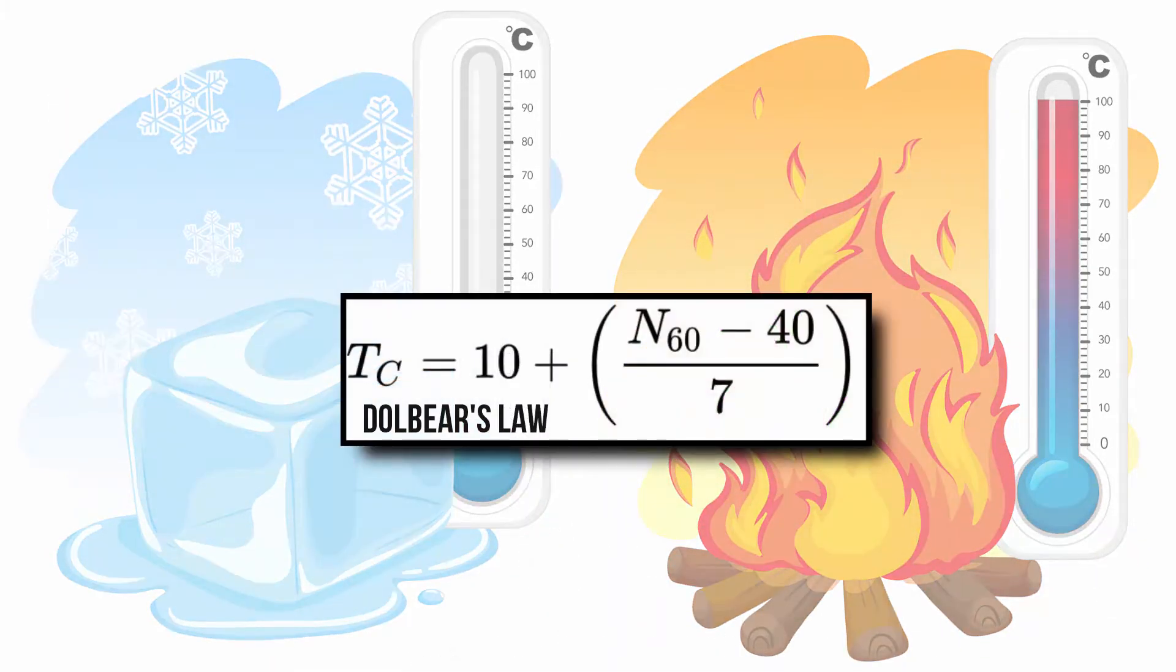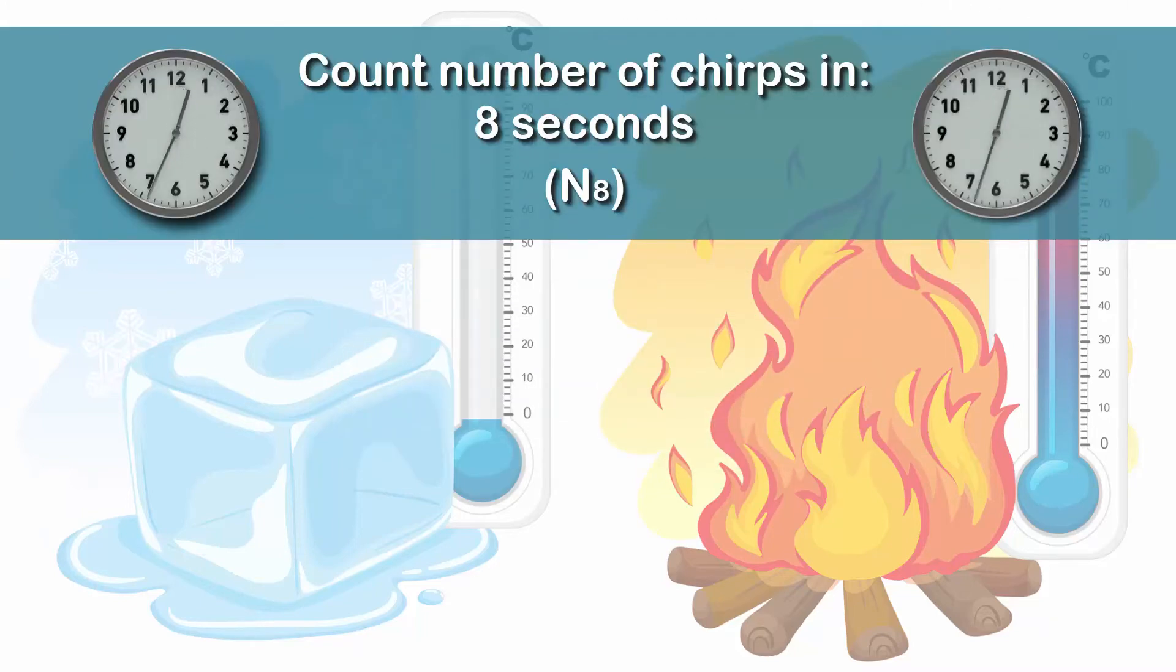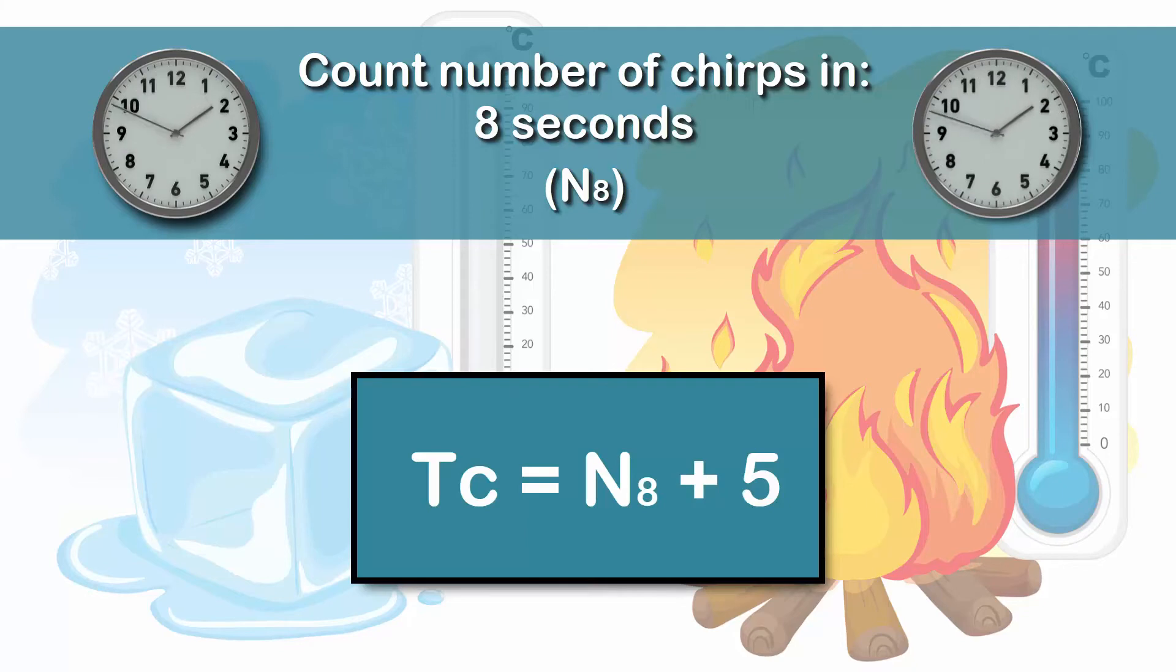The formula is now on screen, but the simplified way would be counting the number of chirps in 8 seconds and adding 5. That's the surrounding temperature.